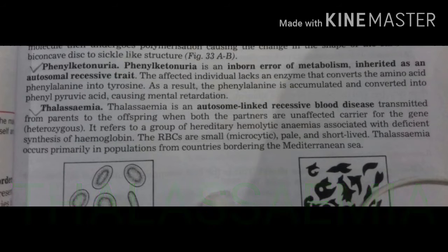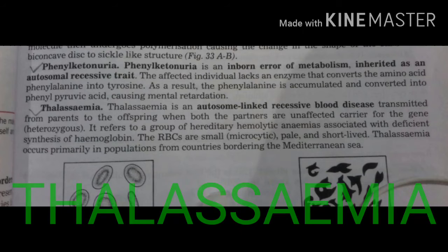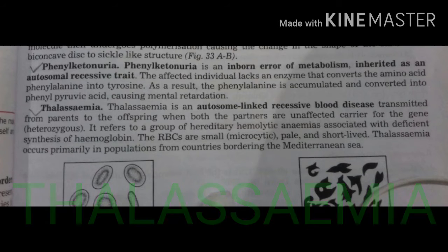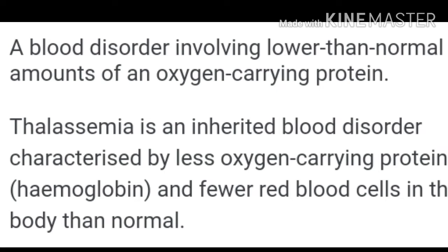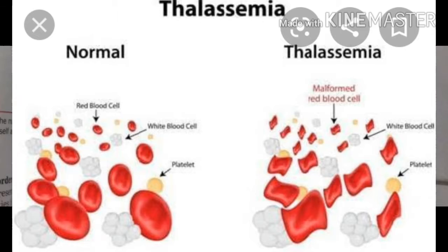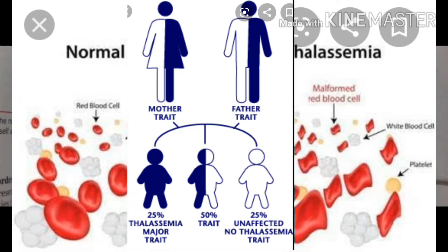Also called Cooley's anemia, persons suffering from thalassemia major are unable to produce beta chains. Their hemoglobin contains delta chains like that of a fetus, which is unable to carry out normal oxygen-transporting function. Thalassemia is an autosomal recessive blood disease transmitted from parents to offspring when both partners are unaffected carriers for the gene — heterozygous.